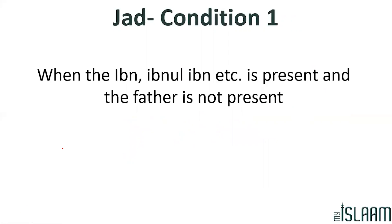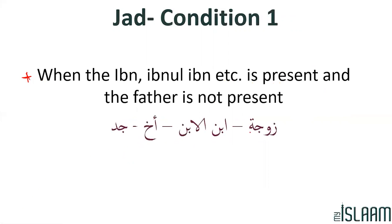Another example for condition number 1 — same conditions: when the Ibn al-Ibn is present and the Ab is not present. In this example we have the Ibn al-Ibn present and there is no Ab anywhere, so the Ab is not present. Therefore the Jad will receive one-sixth.